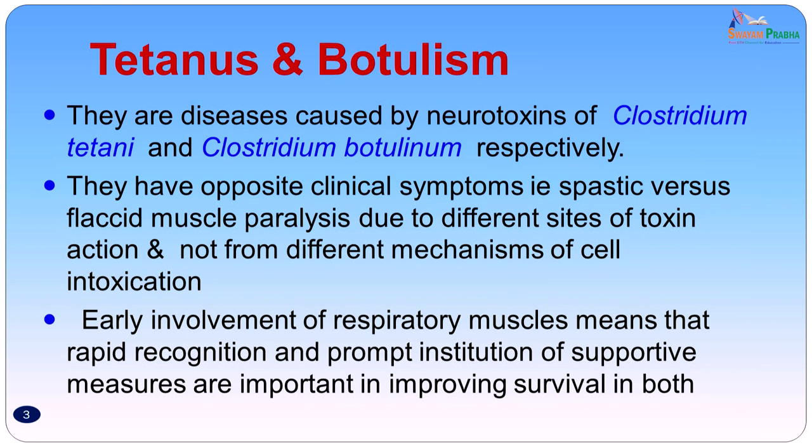Both the mechanisms of action of the neurotoxin of Clostridium tetani and Clostridium botulinum are the same, but they act at different sites. One presents with spastic paralysis while the other presents with flaccid paralysis. There is early involvement of the respiratory muscles, which means that rapid recognition and prompt institution of supportive measures is important to help survival of the patient. Now let us discuss both these diseases one by one, starting first with tetanus.